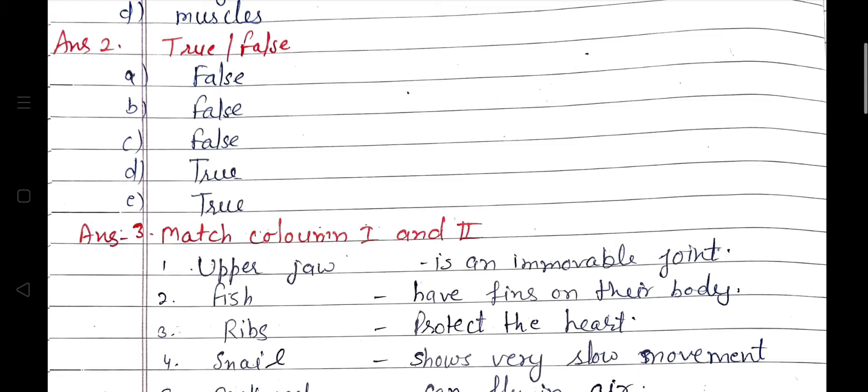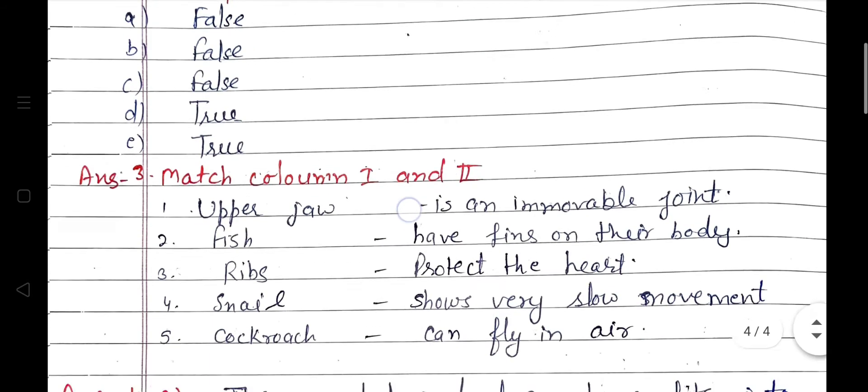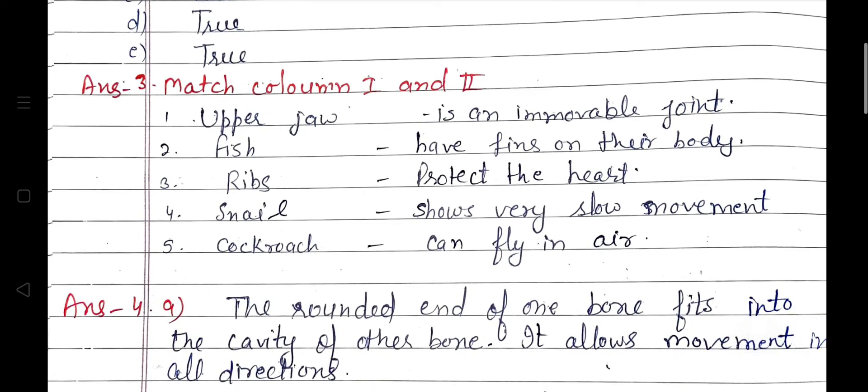Match the items in column one with one or more items in column two: upper jaw is an immovable joint; fish have fins on their body; ribs protect the heart; snail shows very slow movement; cockroach can fly in air.